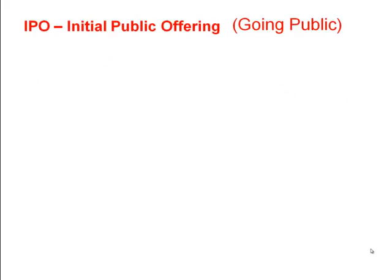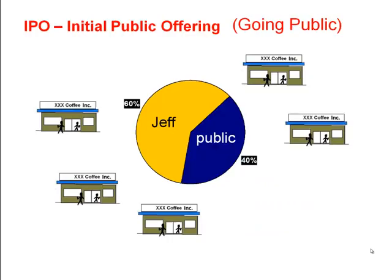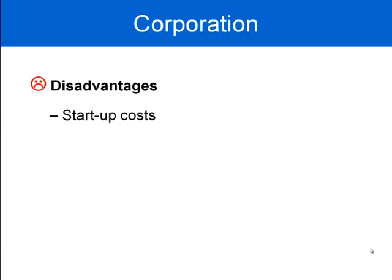As a corporation, there is a second option: equity financing. Jeff can sell shares in the corporation. This is known as going public, or an IPO — an Initial Public Offering — the first time a corporation makes shares available for sale to the general public. Jeff cut the corporation into 10 million shares, sold 4 million shares at $3 each, generating $12 million to expand the business. Jeff now owns 60% and the general public owns 40%.